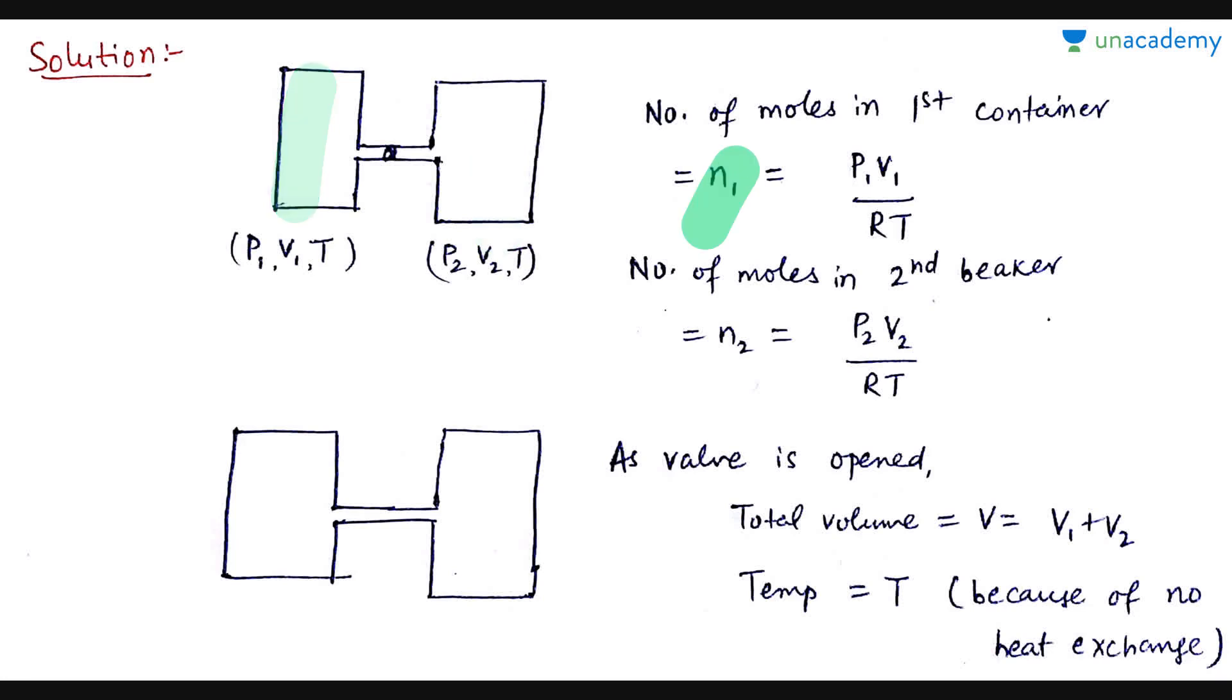For the first cylinder, n1 is going to be equal to P1V1 by RT. Second cylinder's number of moles will be P2V2 by RT. Now, when we open the valve, the gas will become common and fuse. In that case total volume becomes V1 plus V2. But most importantly, if both had temperature T initially, then now also common temperature will be T. The reason is, when temperature is same, you have read in calorimetry that heat transfer does not happen if their phases are also same. So both gases are at same temperature, so heat transfer won't happen, and when heat transfer won't happen, temperature also won't change. So, temperature is going to be same.